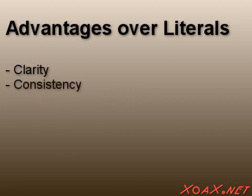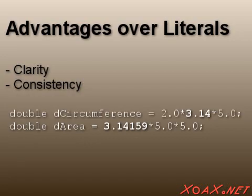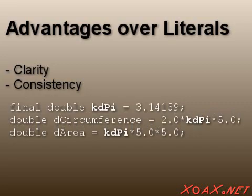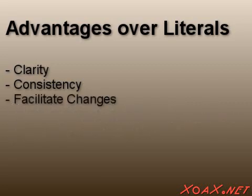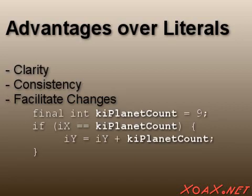Constant types also offer greater consistency. For example, the value of pi might be given by both of the approximate literal values 3.14 and 3.14159 at different points in the code. Using a constant ensures that the value will always be the same. Worse still, sometimes constant values actually need to be changed. Imagine a constant that holds the number of planets in the solar system. Before 2006, this value would have been 9. Now that Pluto is no longer classified as a planet, this value should be 8. Using a constant allows us to make the change universal by altering a single value and recompiling the program.